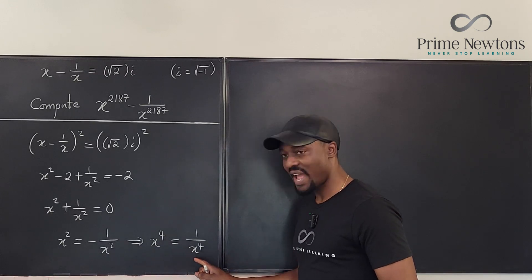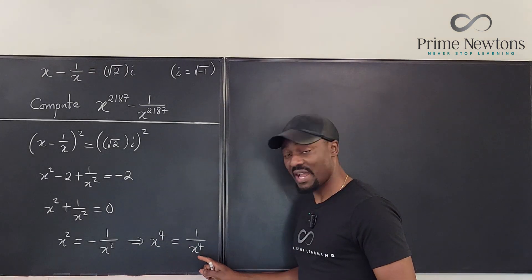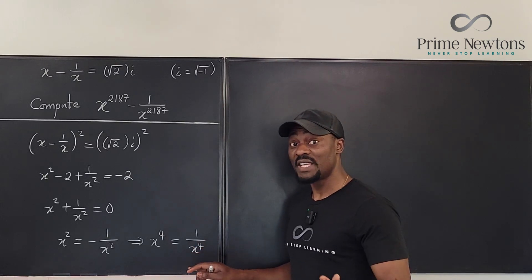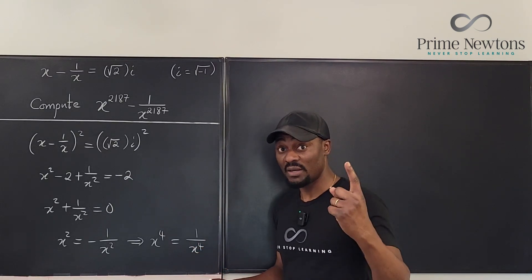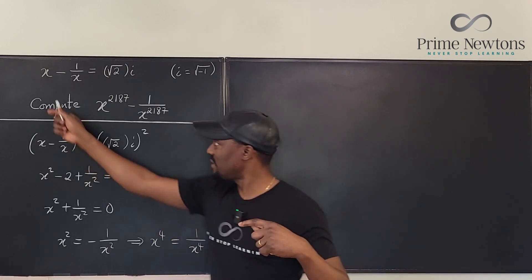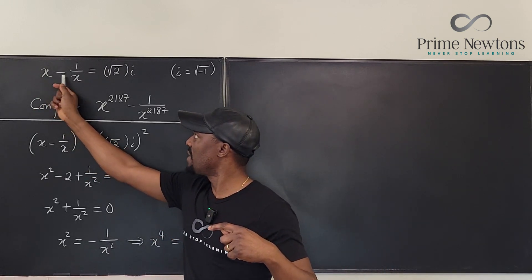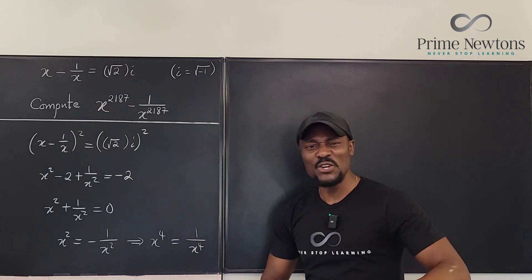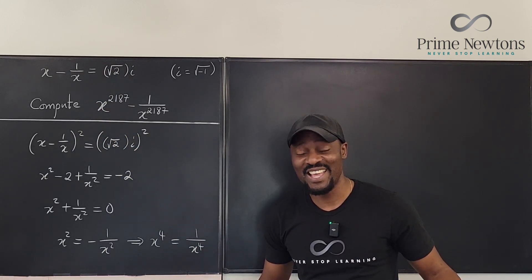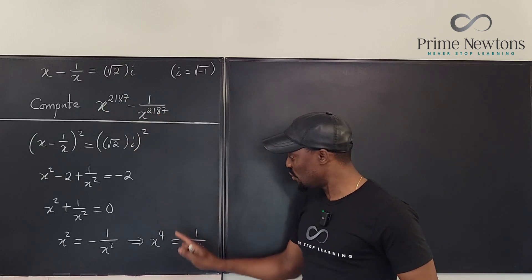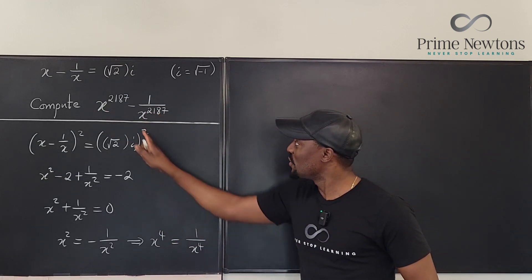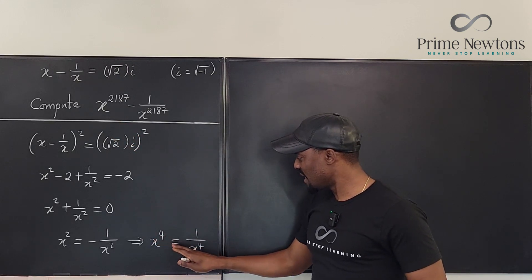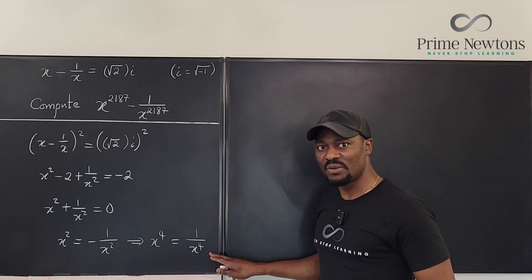And one of the solutions to that is 1 when x equals 1. But you notice that when you go back and plug in 1 here, it's going to be 1 minus 1—it's not 0. So x equals 1 is not a solution. And by the way, nobody wants you to find what x is; they just want you to find what this is. So use what you have here to simplify this.